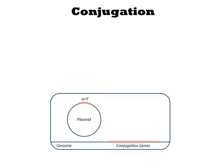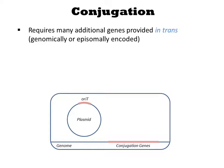Conjugation requires the action of many genes provided in trans. These are often supplied in the genome with special strains, or sometimes they are provided on a separate plasmid. The site of conjugation on the DNA being transferred is called ori-T, and this is referred to as an origin of transfer. Multiple proteins provided in trans are required for this elaborate process to take place, but they all ultimately act upon the ori-T sequence of the DNA being transferred.